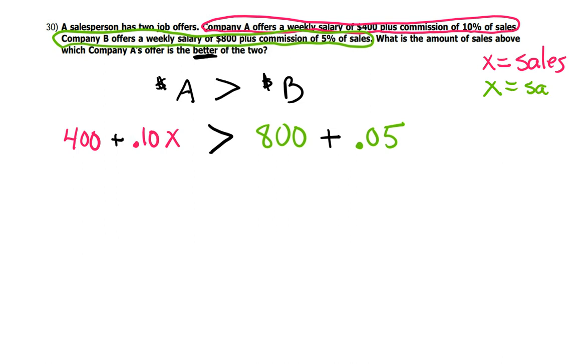It doesn't matter which company you're with, it's going to be X either way. And that's my equation. So solve for X to figure out the amount of sales so that Company A would be better than Company B.